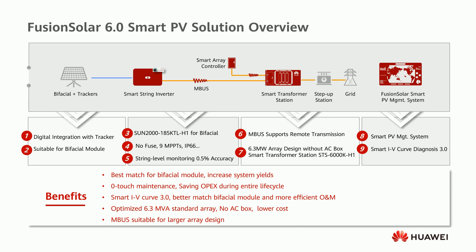Between the smart string inverter, our smart transformer station, and our smart array controller, we provide M-BUS communication, which relies solely on the AC cables — there are no separate cables for communications. With the optimized 6.3 MVA standard block design, we can lower the cost of installation and there is no need for AC boxes.